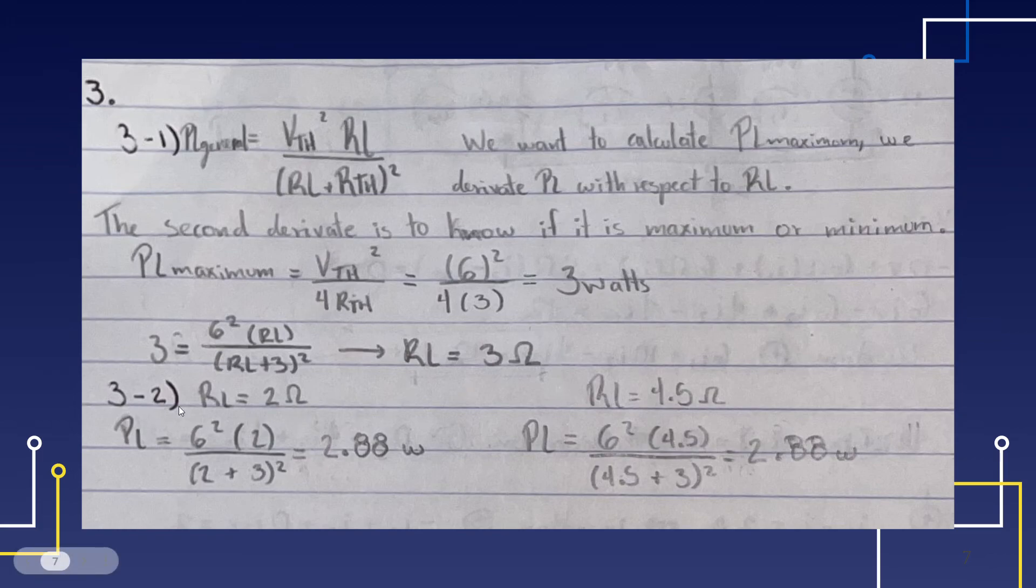And lastly, we're asked if we use a 2 ohm or a 4.5 ohm resistor, which one will be hotter. And if we use that in the PL general, it will give us the exact same value, so it will be the same, 2.88 watts.